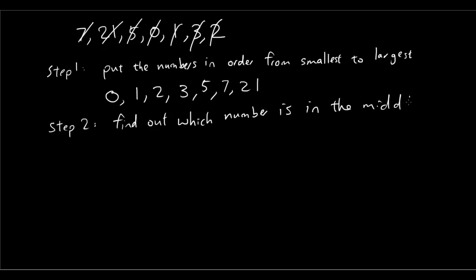And what you can do is simply cross out one number at a time from each end. So I am going to cross out one number at a time until I get to the middle number, which is 3. So 3, the median is equal to 3.